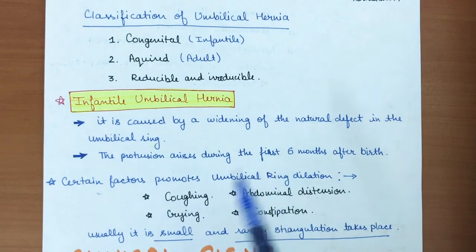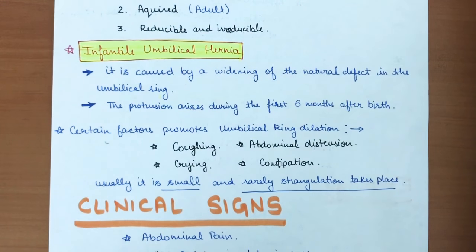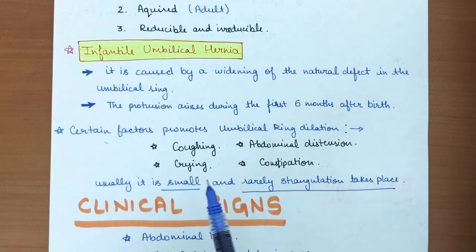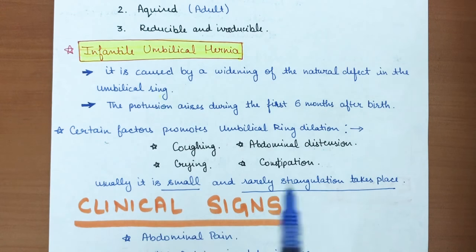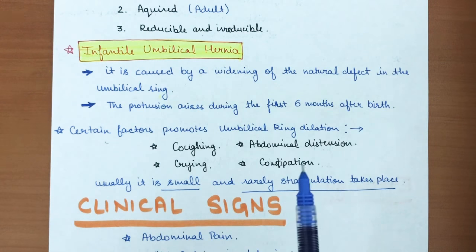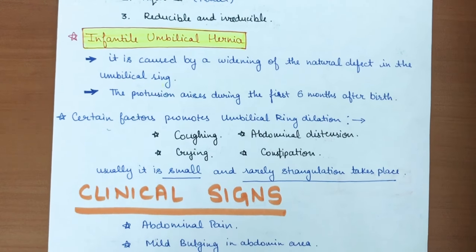Certain factors promote umbilical ring dilation in infants: coughing due to infection or other conditions, abdominal distension, continuous crying — which increases intra-abdominal pressure — and constipation. Usually the hernia is small and strangulation rarely occurs in infantile umbilical hernia.